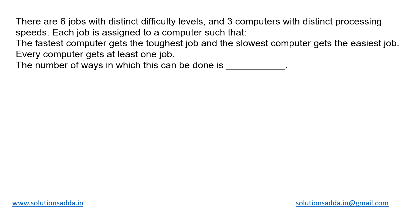This is a combinatorics question from mathematics. We have been given six jobs with distinct difficulty levels, so all six jobs are distinct. There are three computers with distinct processing speeds, so these three computers are also distinct. Each job is assigned to a computer such that the fastest computer gets the toughest job.